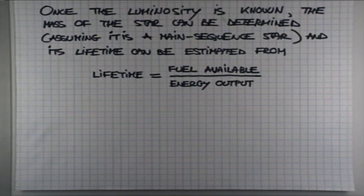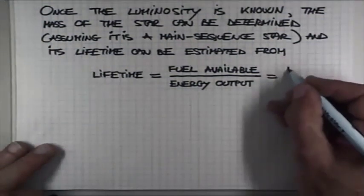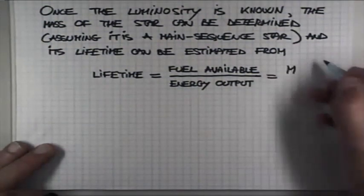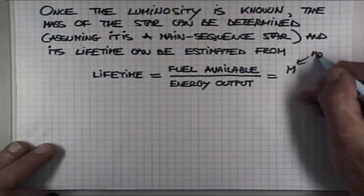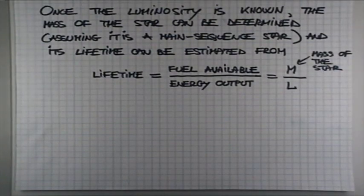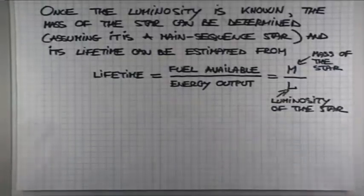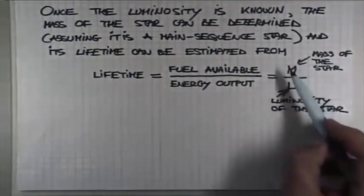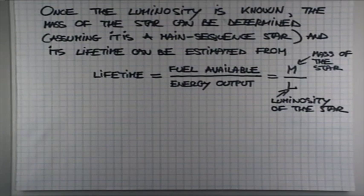The same here. The fuel available is basically given by the mass of the star. The energy output is basically its luminosity. Once you know the mass and the luminosity, you can figure out how long the star is going to live.